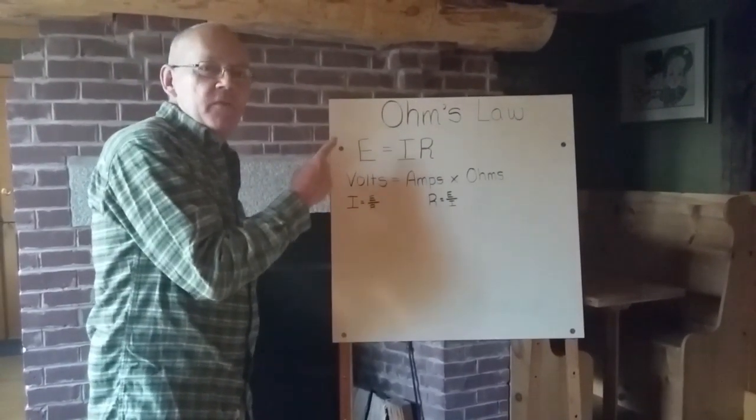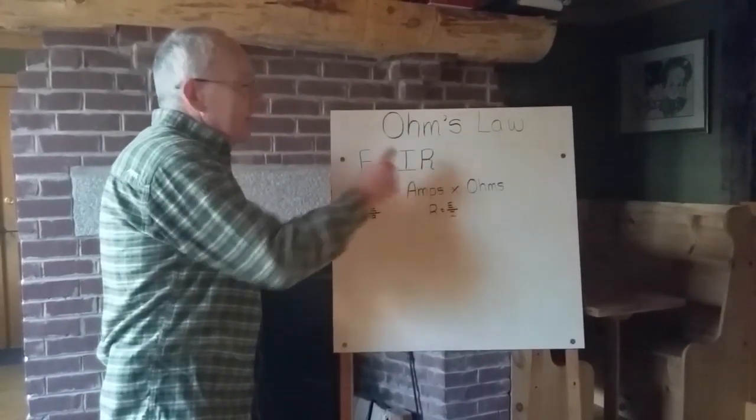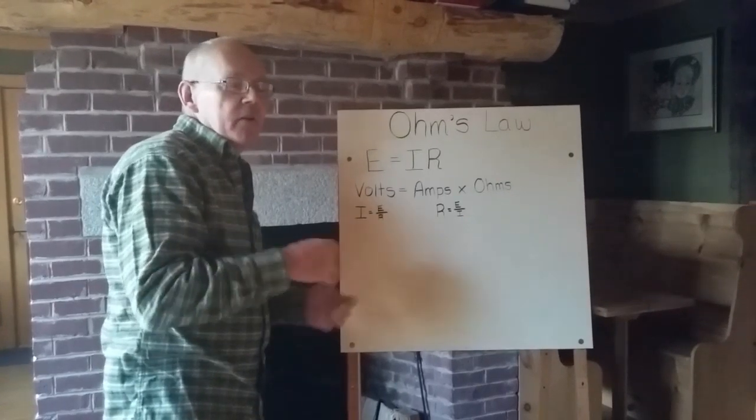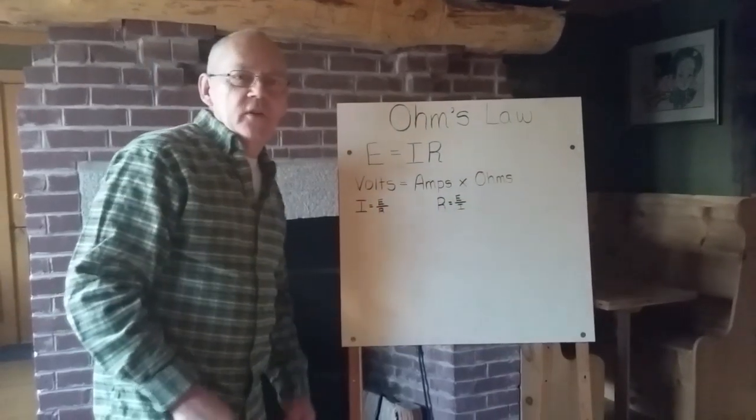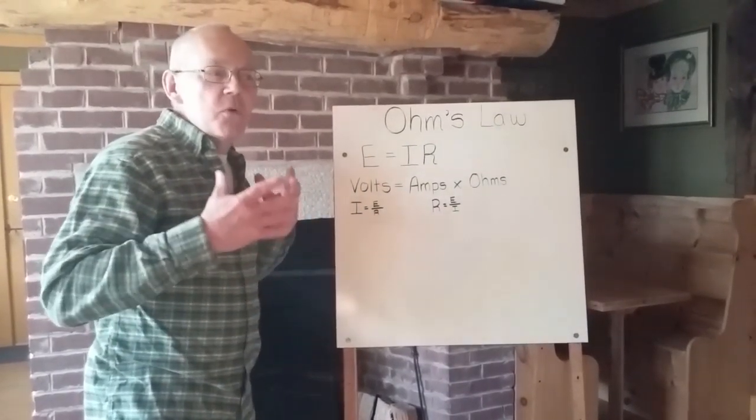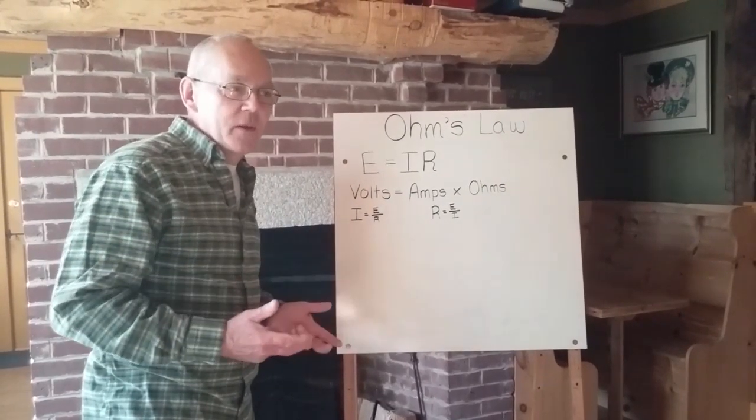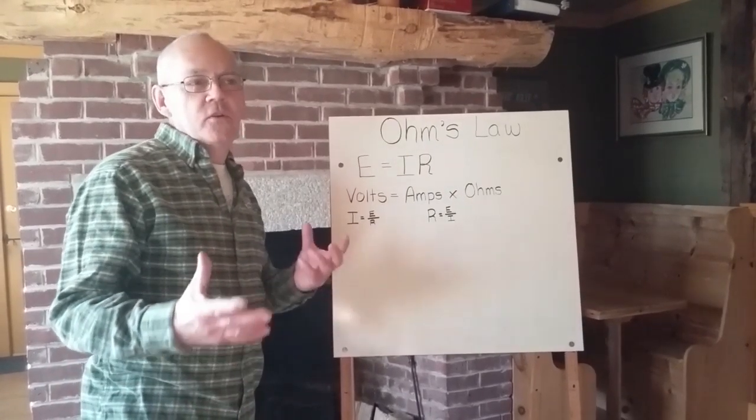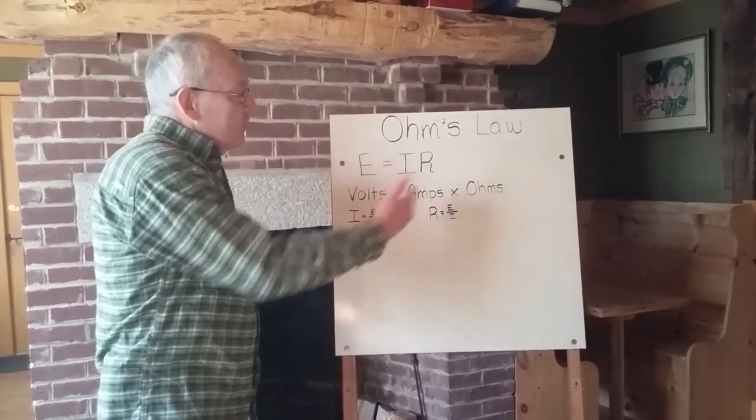E is electromotive potential, how hard we're trying to jam that electricity down the wire. I equals current, which we measure in amps. We measure E in volts, and current is the volume of electrons going down the wire. R is resistance, you can't get away from it. Everything has resistance, some things more, some things less. Even some things we want to have resistance, like the heating elements in your toaster, but most of the time you don't want them to have resistance, they just do. Even your batteries and your battery bank have internal resistance. Can't get away from it, and that's why it shows up in the formula.